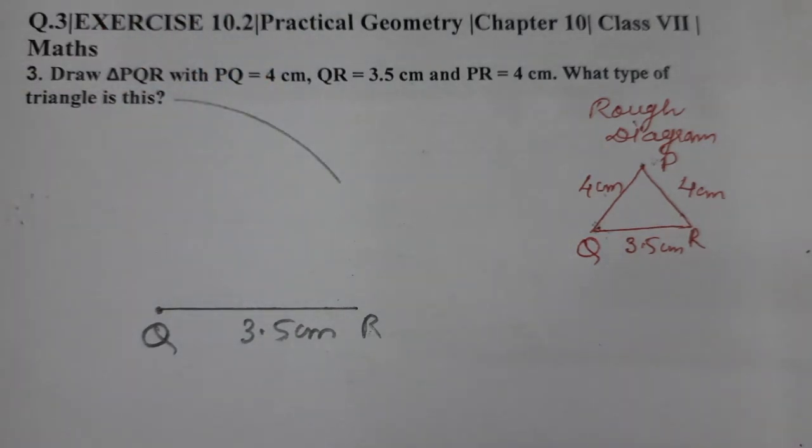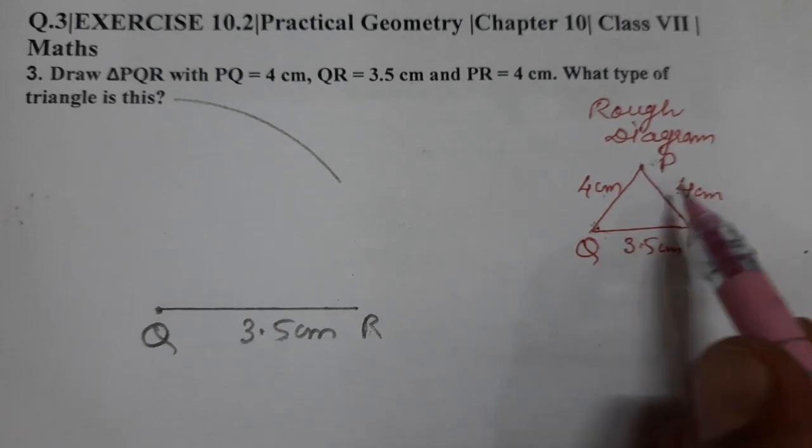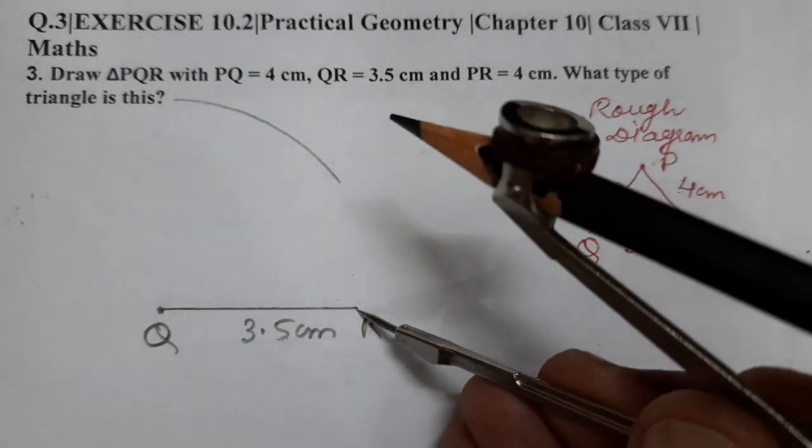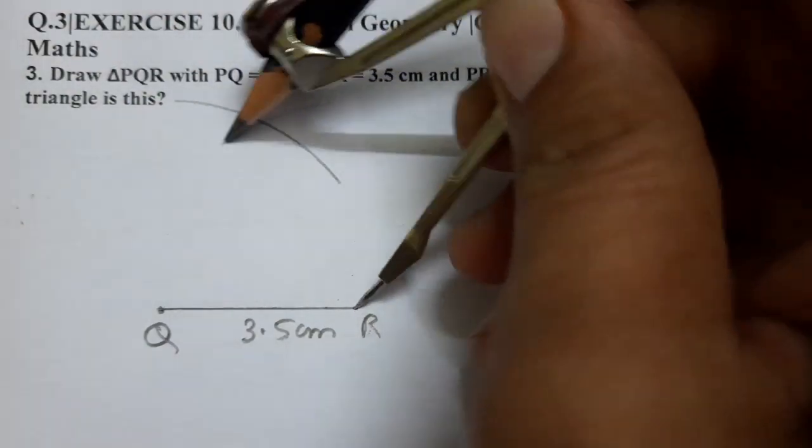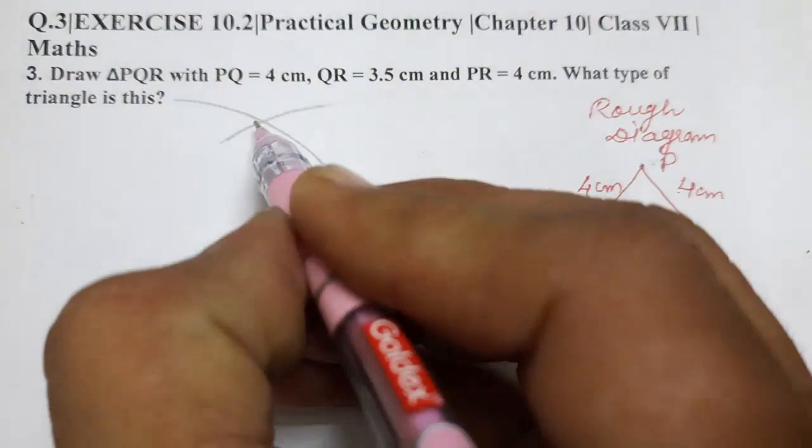And with R center and arc radius 4 again. We'll cut from here with same arc radius we have to cut. Like this we have to cut. Give this name as P. This is P.